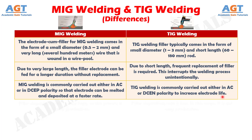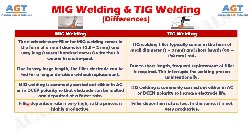Number 8: In MIG welding, filler deposition rate is very high, so the process is highly productive, whereas in TIG welding, filler deposition rate is low. In this sense, it is not very productive.